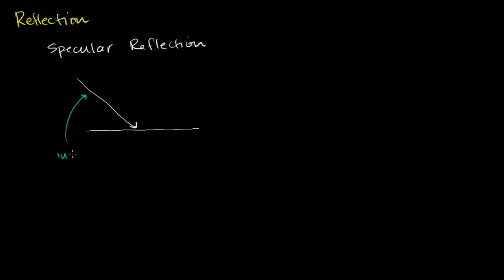That right there is the incident ray — it approaches the surface. And you can imagine that it bounces off at essentially the same angle but in the other direction. It hits the surface and bounces off, and we call this the reflected ray, after it has bounced off the surface.